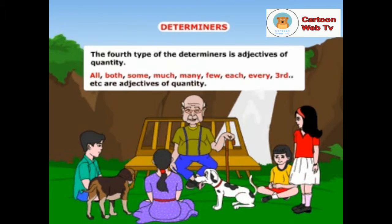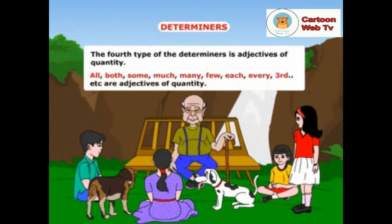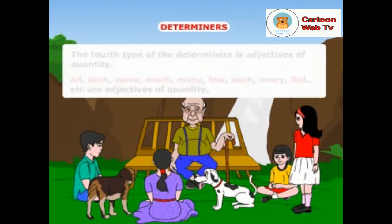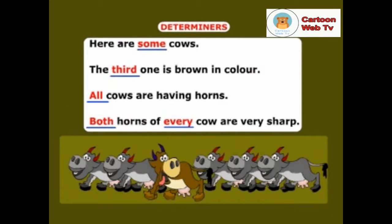The fourth type of determiners is adjectives of quantity. All, both, some, much, many, few, each, every, third, etc. are adjectives of quantity. Look at these sentences: here are some cows. The third one is brown in colour. All cows are having horns. Both horns of every cow are very sharp. Note here, the adjectives of quantity are underlined.